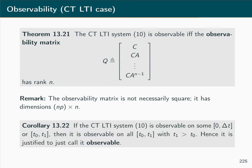Corollary 13.22 states that if a continuous time linear time invariant system is observable on some interval [0, Δt] or [t₀, t1], then it is observable on all time intervals [t₀, t1] with t1 > t₀. Hence it is justified to simply call the system observable and omit the indication of the time period.